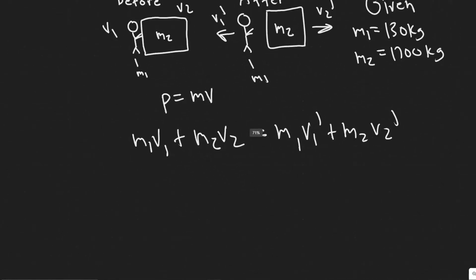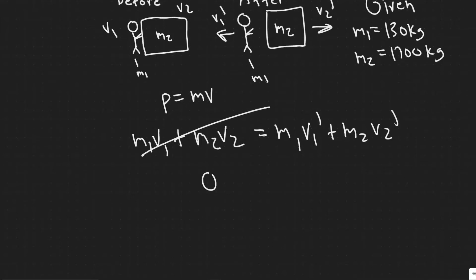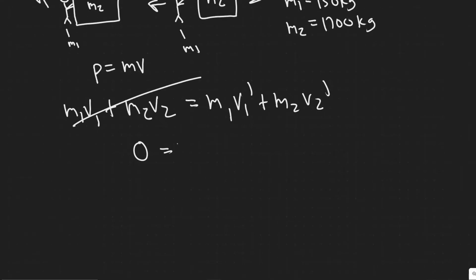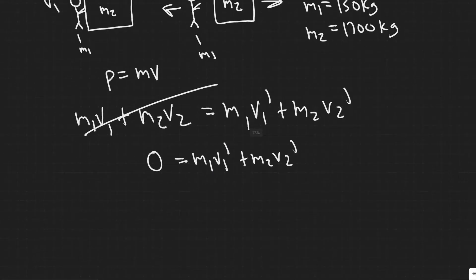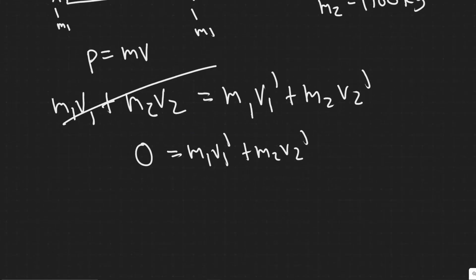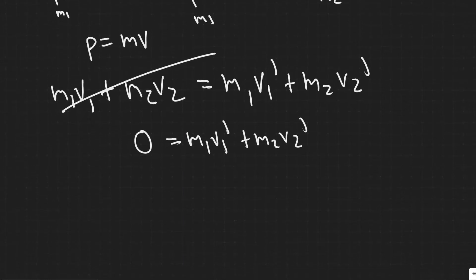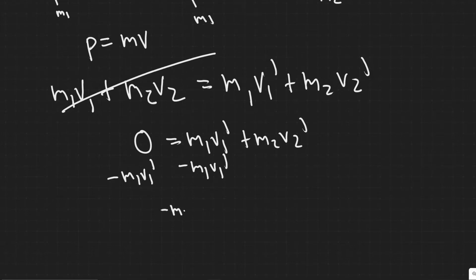So we have 0 equals M1 V1 prime plus M2 V2 prime. We only need V1 prime now, which is the speed after the push — they tell us it's 2.5 meters per second, so V1 prime is 2.5 m/s. To solve for V2 prime, we move M1 V1 prime to the other side: minus M1 V1 prime equals M2 V2 prime.